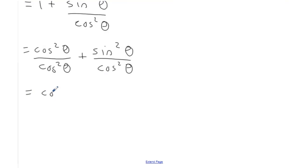So that equals cos squared theta plus sine squared theta over cos squared theta. And now we know that sine squared theta plus cos squared theta equals one.